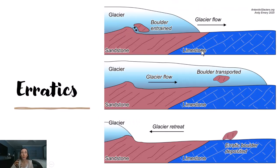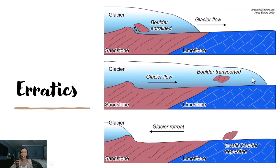Erratics are the next feature. In the bottom picture, you can see a piece of sandstone — a pink rock — left on top of limestone. We wonder how it got there, since water probably didn't transport something so large. What would have happened is that glacial ice moved over the surface and chunked off a piece of that sandstone. As the glacier flowed, it carried that sandstone with it. Eventually, as the ice melted and the glacier retreated, it just dropped that boulder down. That's an erratic.